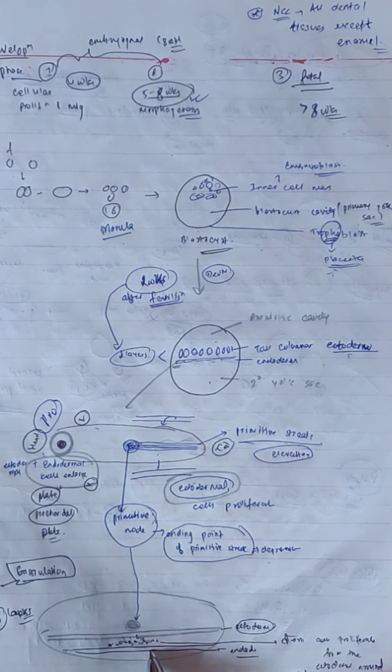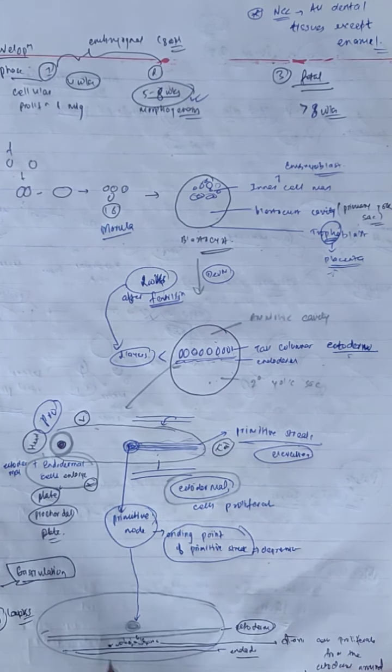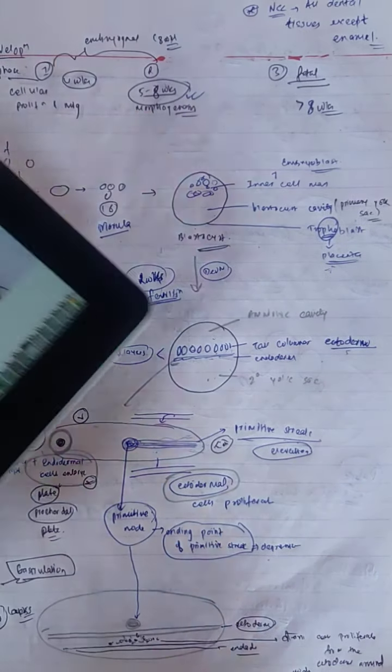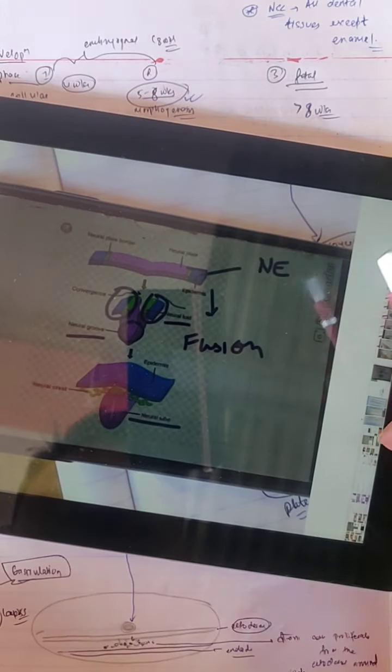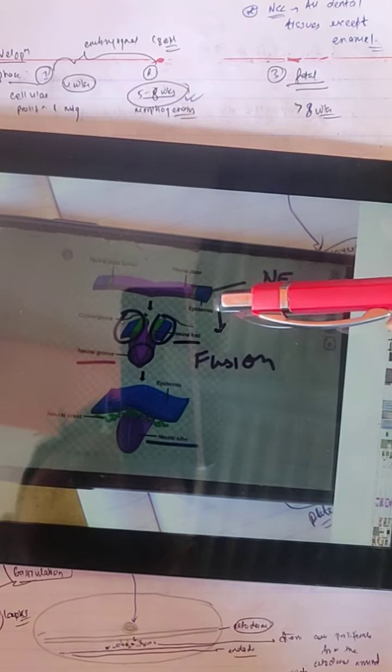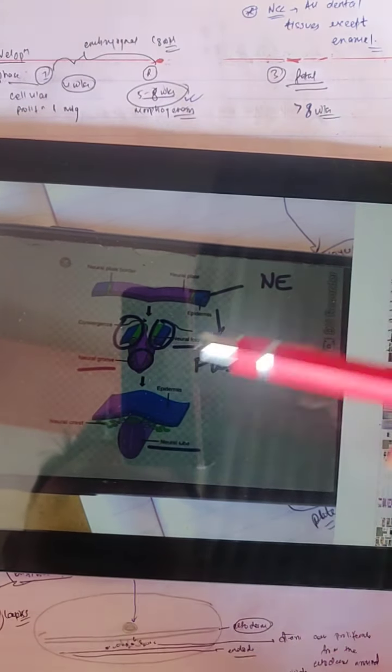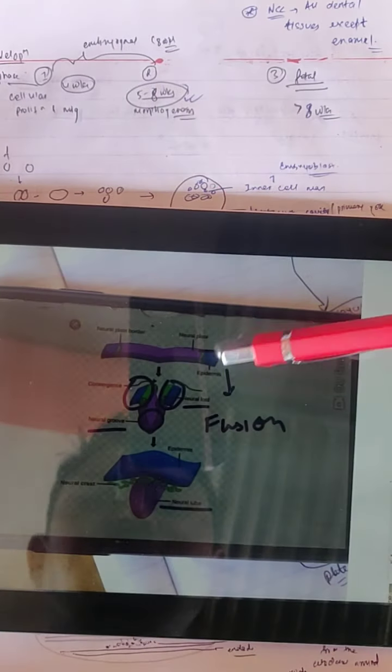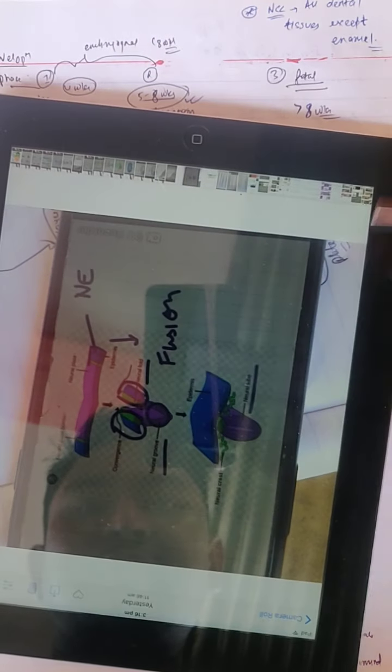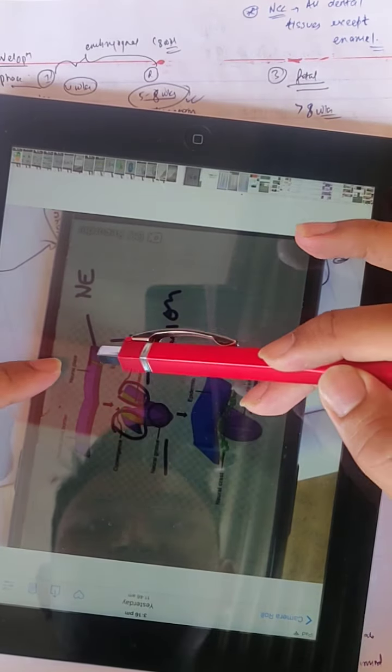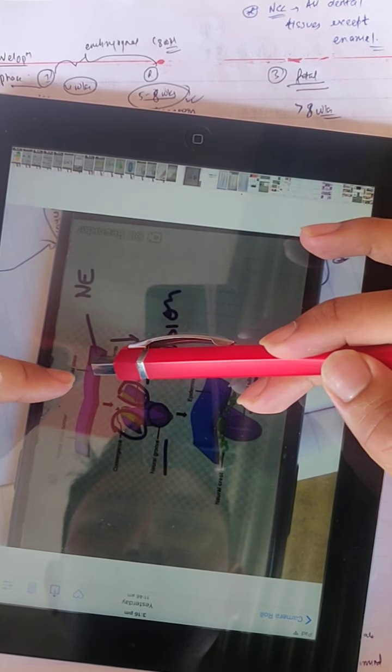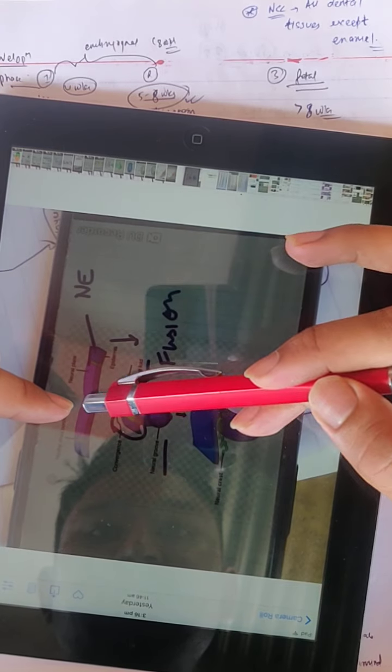There are ectodermal cells, mesodermal cells, and endodermal cells. We have gastrulation. What happens with gastrulation? We have a neuroectoderm plate. Neuroectoderm plate forms the neural tube. They have a group which forms the neural crest.